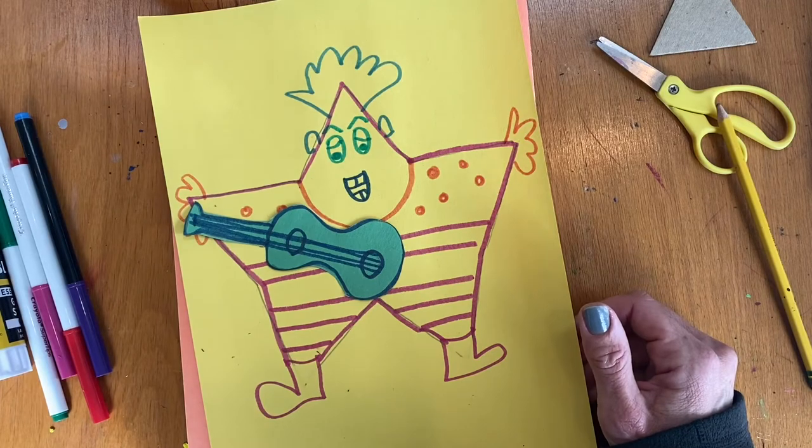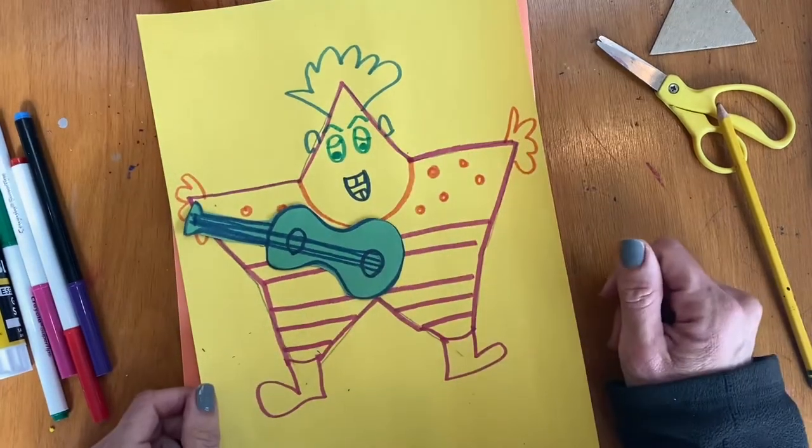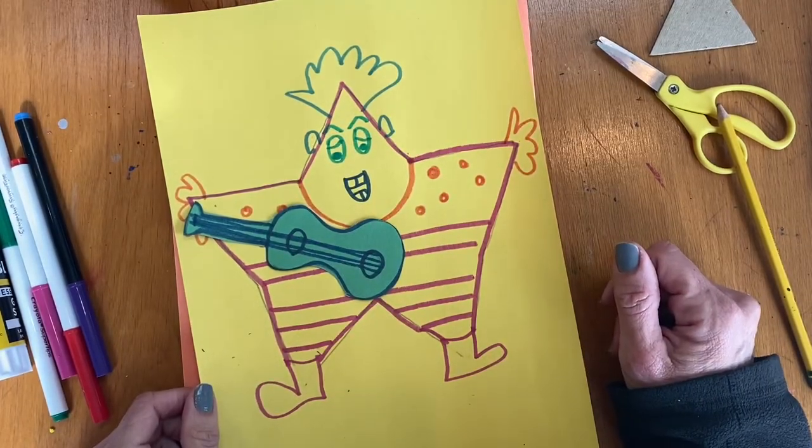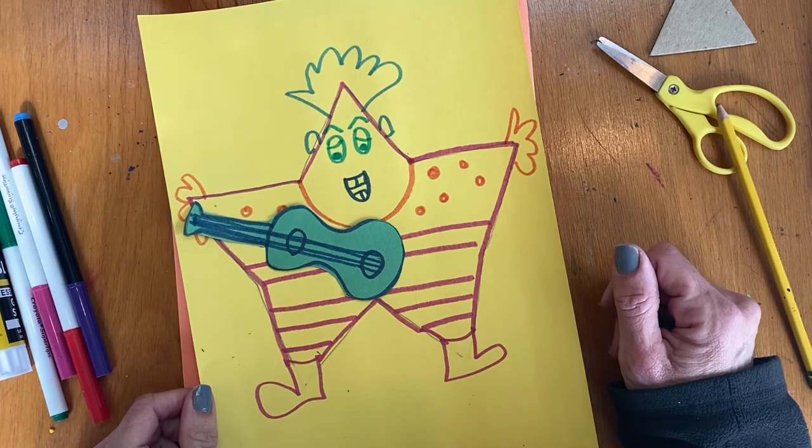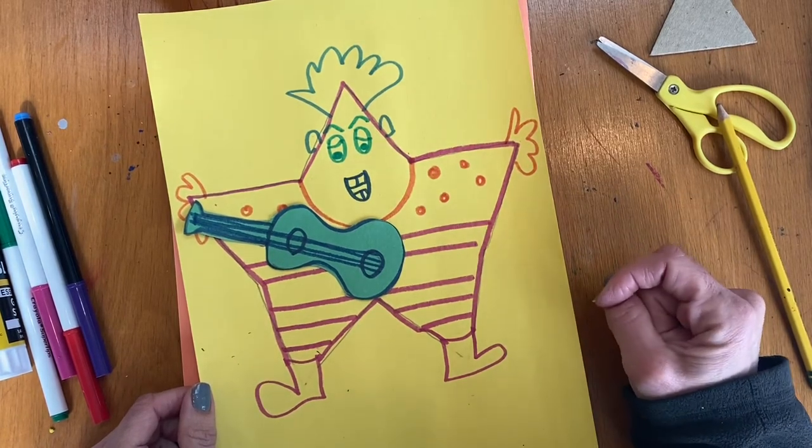So go ahead, make some sort of a musician using whatever kind of shape you guys want to start with. And send me a picture of you guys at home. And don't be afraid to make a beautiful oops. I feel like I made some beautiful oopses along the way here. So have some fun guys.